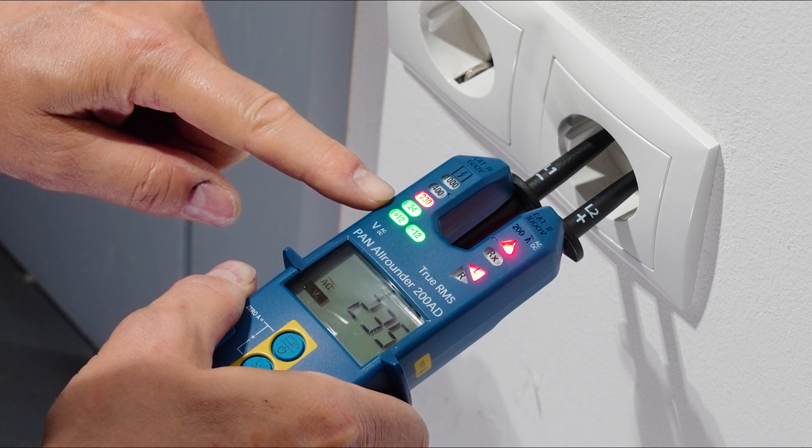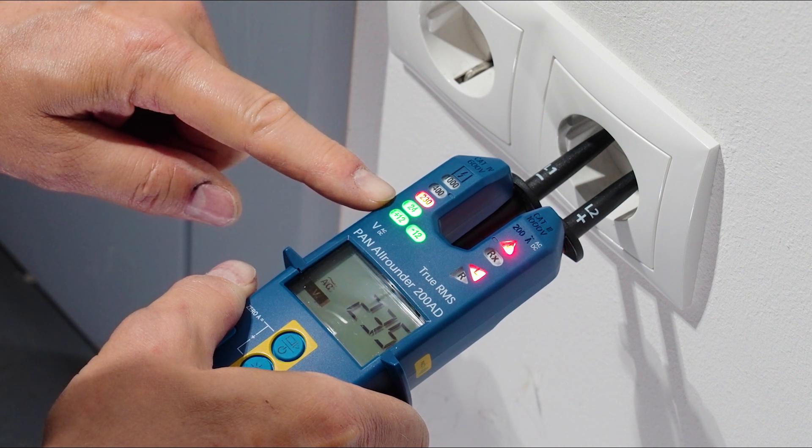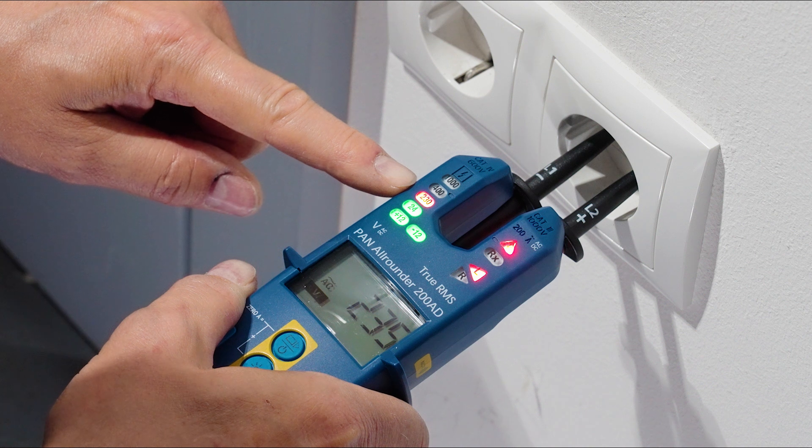Harmless low voltages up to 24V are shown in green, higher dangerous voltages in red.